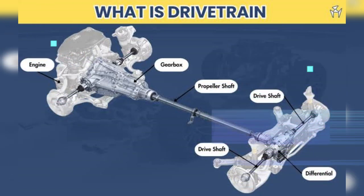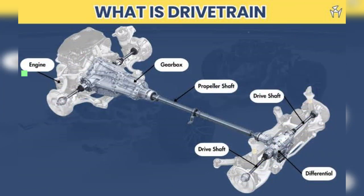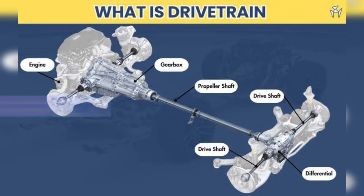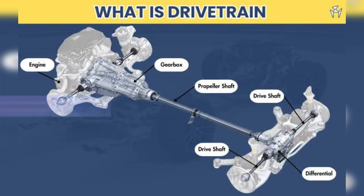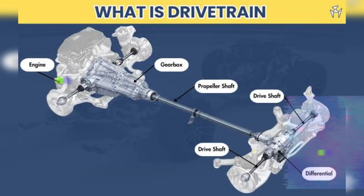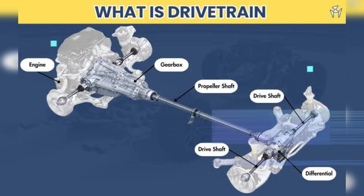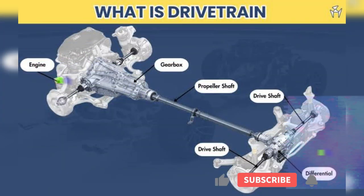The flywheel is a heavy disc connected to the engine crankshaft that stores rotational energy. The clutch, in a manual transmission, engages and disengages the engine from the drivetrain, allowing for gear changes. The torque converter, used in automatic transmissions, acts like a fluid clutch, transferring power from the engine to the transmission. The transmission changes gear ratios to optimize engine power for different driving conditions.